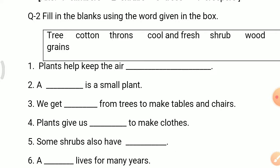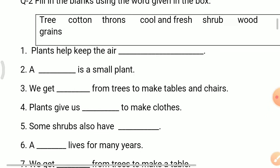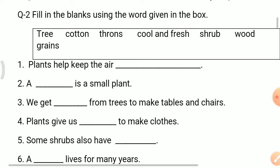Number 2: A ___ is a small plant. Which plant is a small plant? The answer is shrub. Shrub is a small plant. Number 3: We get ___ from trees to make tables and chairs. To make tables and chairs, what do we get from trees? The answer is wood. We get wood from trees to make tables and chairs.